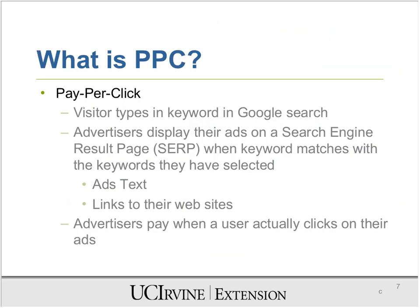Now let's understand what PPC is. PPC stands for pay-per-click. Visitors type a keyword into Google search. Advertisers display their ad on the search engine result page, and when the keyword matches the one they have selected, the ad text and link are displayed. If anyone chooses to click on that link, they arrive at your website. But you pay only when somebody actually clicks on your ad — if nobody clicks, you don't pay anything.